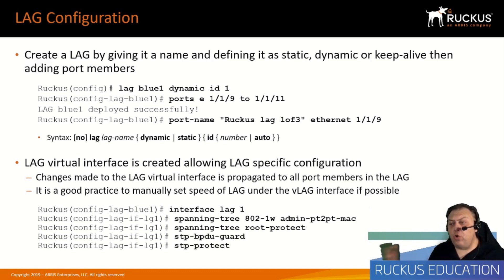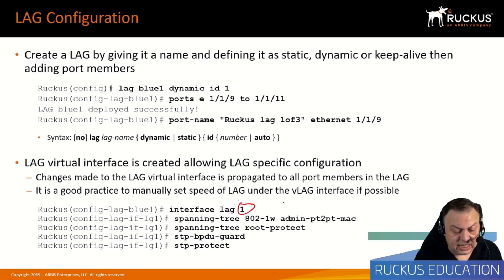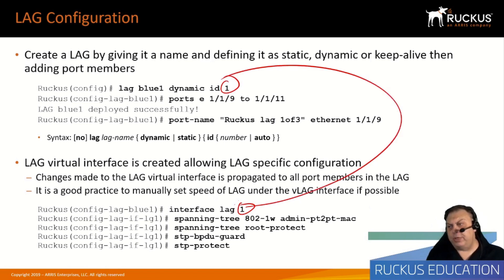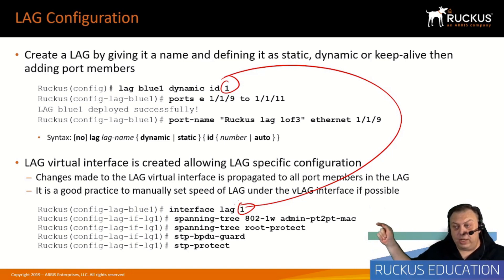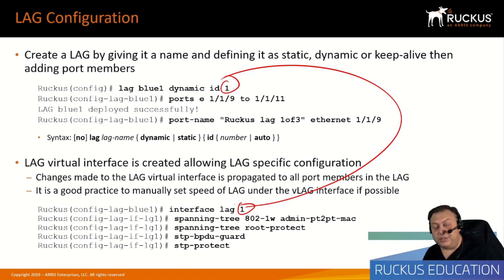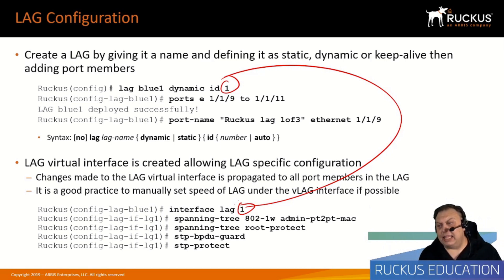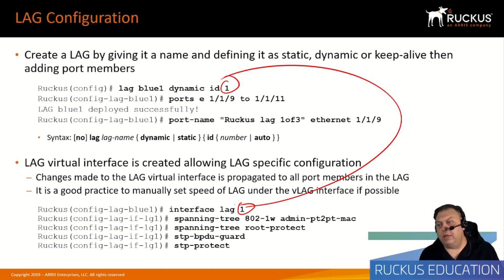Configuration that would normally be done at the port level is now done at the lag interface instead. Going to the prompt for 'interface lag 1' — matching the ID of the LAG created earlier — that's where you define it as a point-to-point link for rapid spanning tree, or where you turn on root guard, BPDU guard, or STP protect. Note that you would not enable all these options on the same link simultaneously, as BPDU guard and STP protect are mutually exclusive. Commands that once ran at the port level are now applied at the logical lag interface.